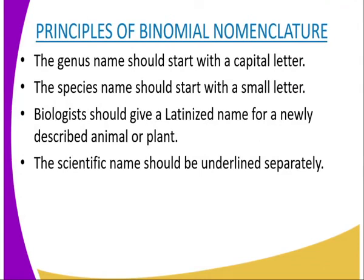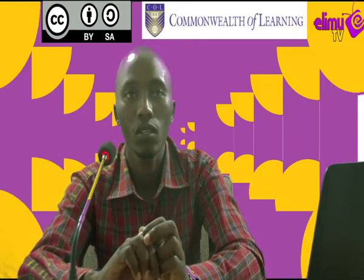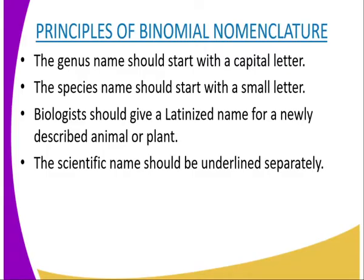We have principles of binomial nomenclature. Binomial — by means two — means the scientific name has two parts. The first principle is that the first name is the genus name, and it is the second lowest in the hierarchy. The genus name should start with a capital letter. The second name is the species name, and the species name should start with a small letter.